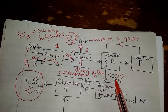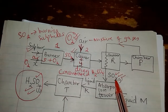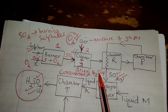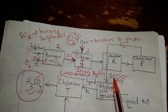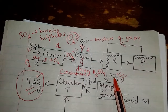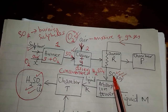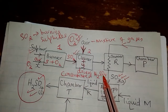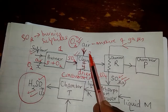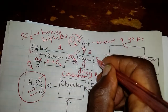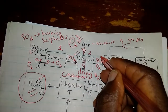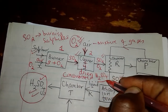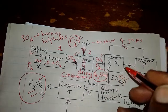SO3 is deliquescent — it can absorb moisture and form a solution. So there is a difference between deliquescence and hygroscopy. Hygroscopy means the ability of a substance to absorb moisture but it does not end up forming a solution. Deliquescence means the ability of a substance to absorb moisture and form a solution as well. We dry the two gases by passing them through concentrated sulfuric acid, so the moisture gets removed and the gases — SO2 and oxygen — are free from dust particles, impurities, and moisture.